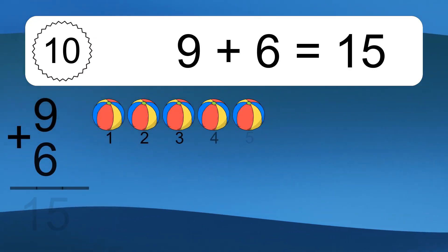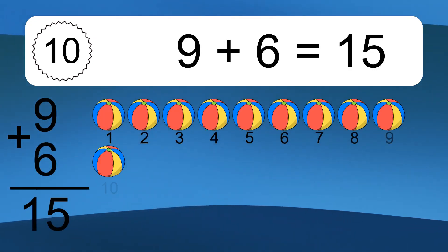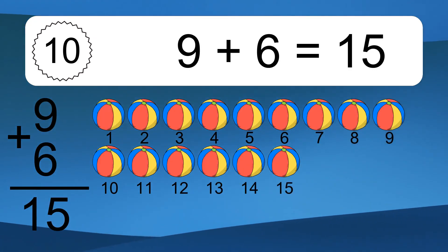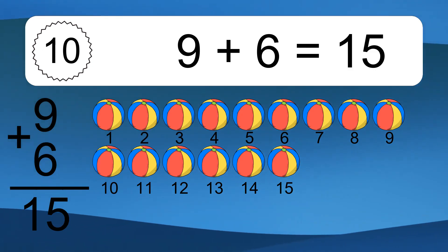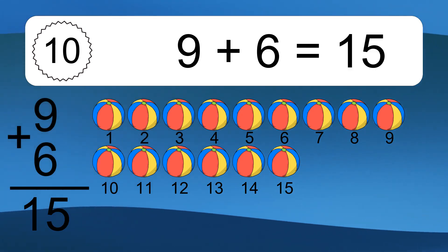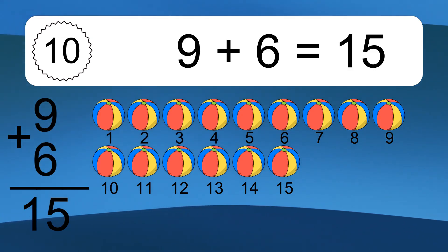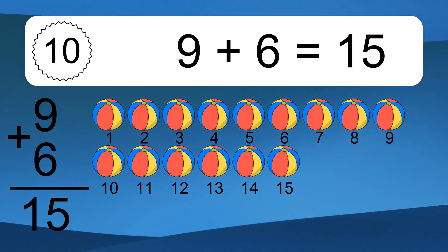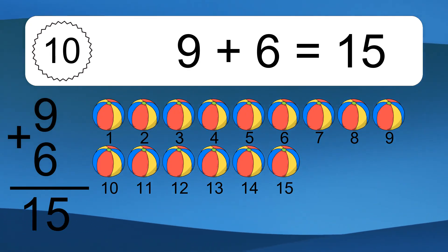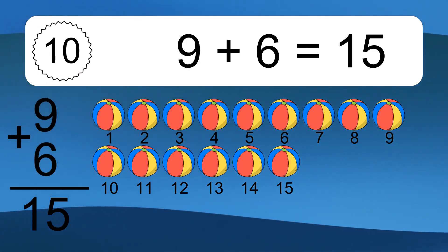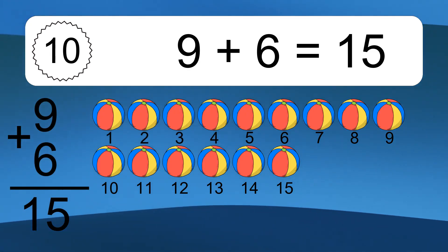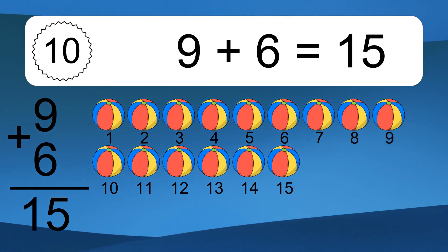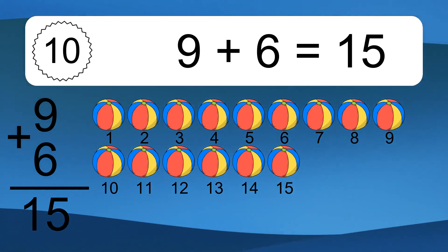9 plus 6 equals 15. Let's count it: 1, 2, 3, 4, 5, 6, 7, 8, 9, 10, 11, 12, 13, 14, 15.